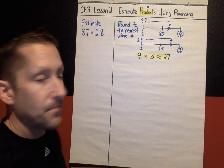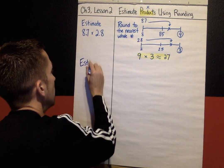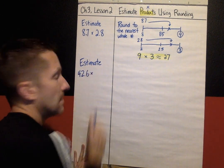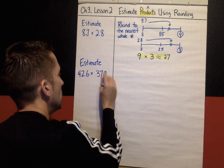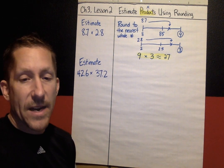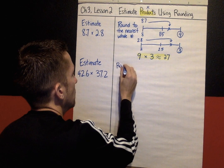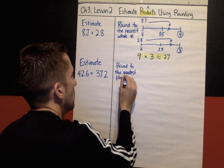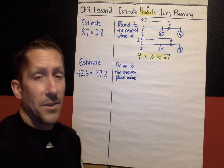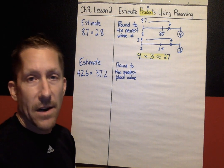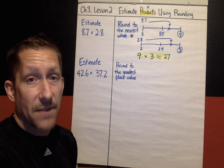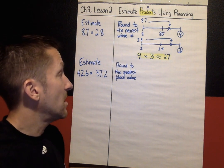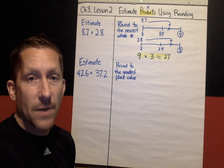The next problem we're going to look at is how would we estimate 42.6 times 37.2. Now this time we are going to round to the greatest place value. I should have said this at the very beginning: this is a lesson where, when you're checking the workbook in front of the class, you may have different answers because these are estimates — not exact answers. You might have a slightly different estimate than what I came up with, and that's okay as long as it's close.